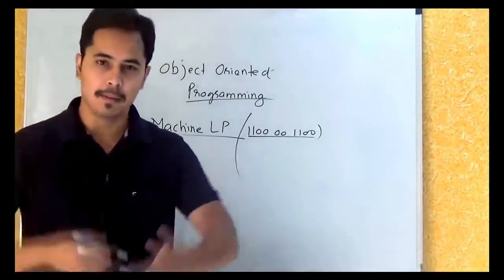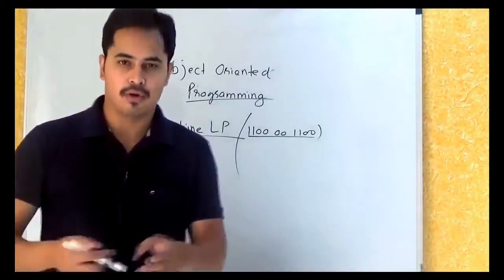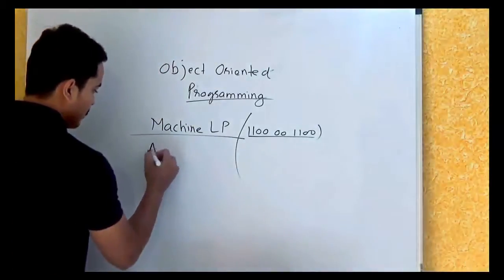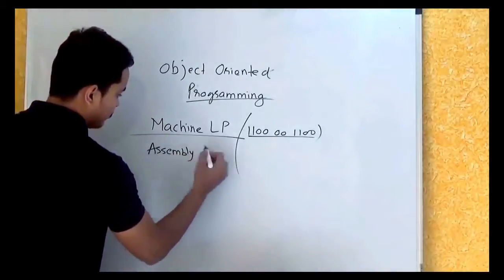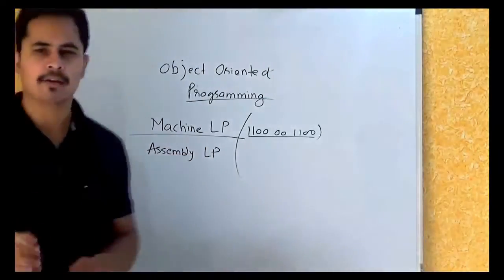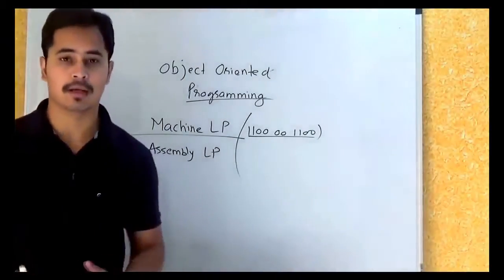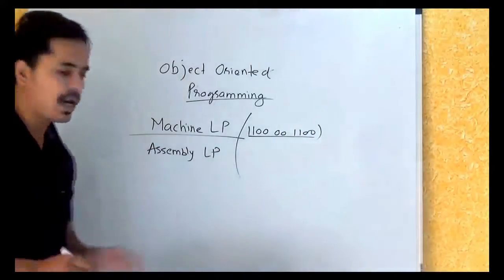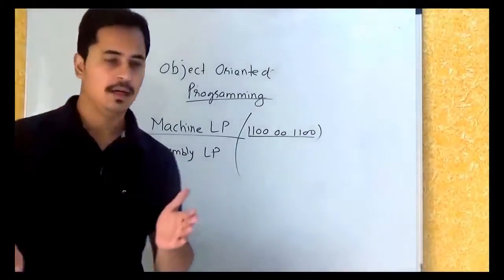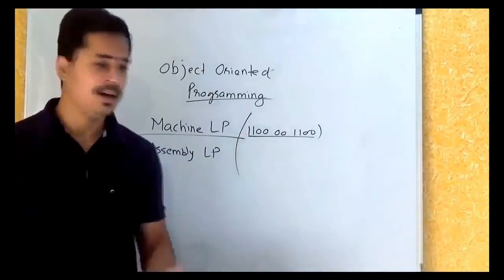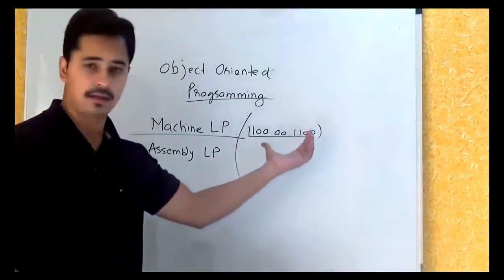So that's what everyone thought, and people moved on to the next way of programming, which was known as assembly language programming. Assembly language programming was a bit better than machine language programming in the sense that assembly language was more like English. Machine language is just a combination of 1s and 0s — you can't really make sense of it.